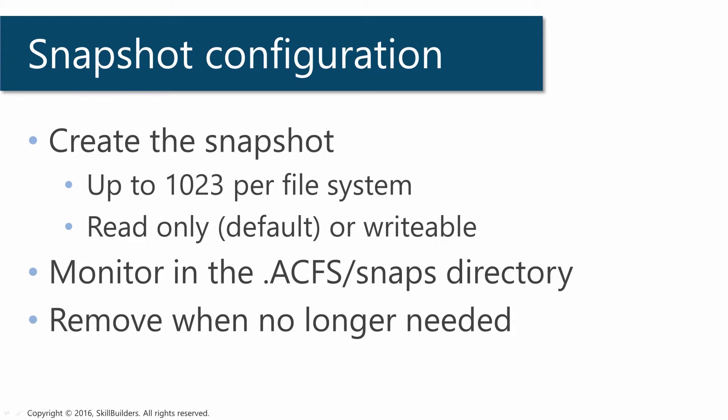You can monitor the space usage. The snapshots themselves are visible in a hidden directory, .acfs/.snaps. That directory is there - you can go to it if you know where to go, but it's invisible to Unix utilities. So commands such as a recursive LS listing or a recursive copy will not descend into the snapshot directory. Then when you're through with the snapshot, remove it, which is pretty much an instantaneous process.